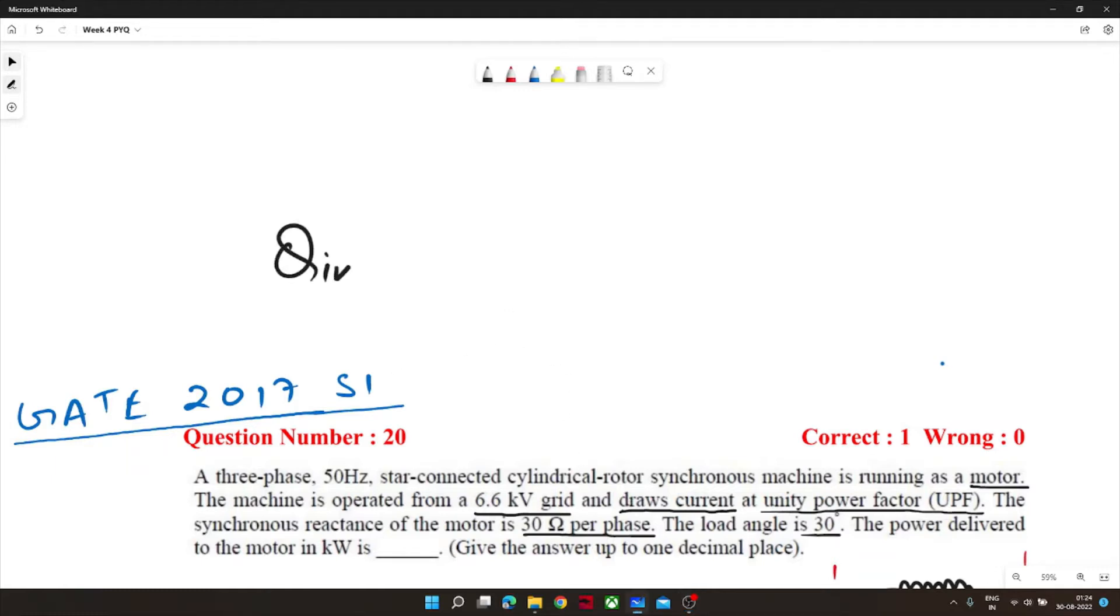Now the synchronous reactance of the motor is 30 ohm per phase and the load angle of 30 degree is also given. We have to calculate the power delivered to the motor in kilowatt. So let's see what we can do here.